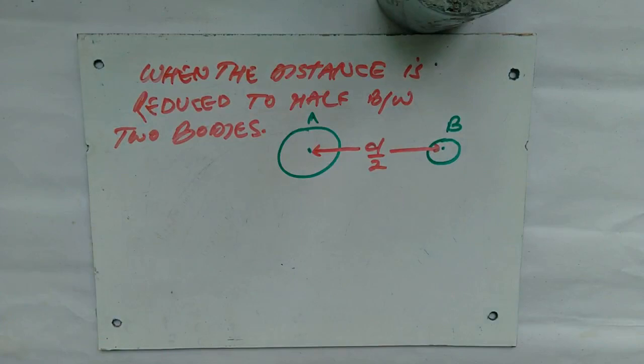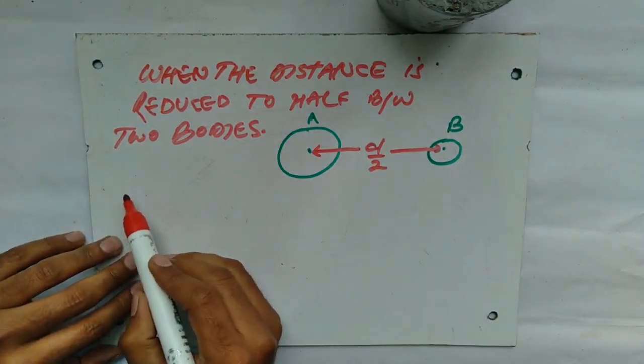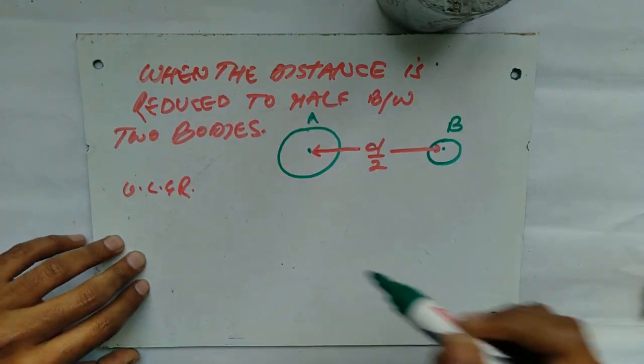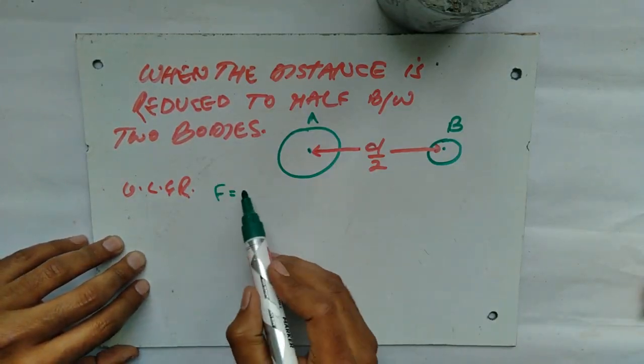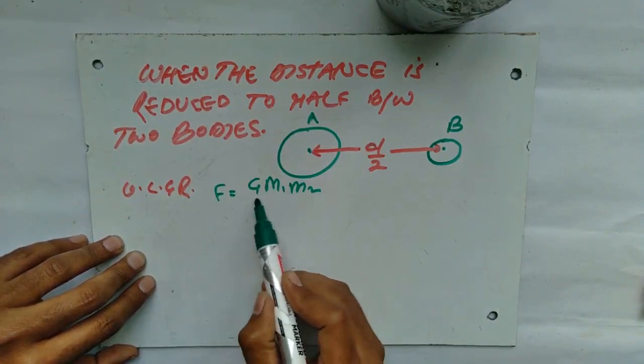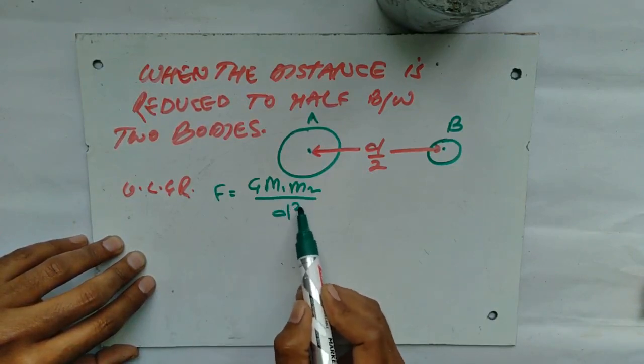Now by applying universal law of gravitation, we have the force is equals to G m1 m2 upon d square.